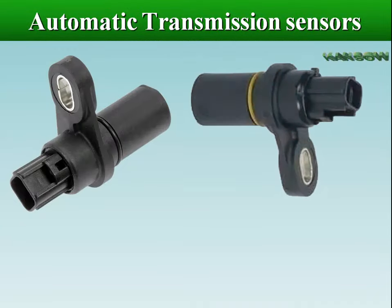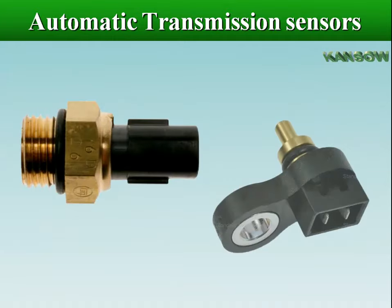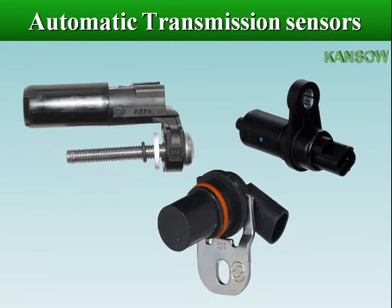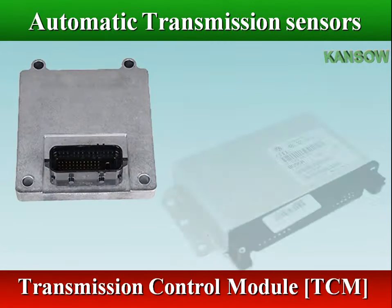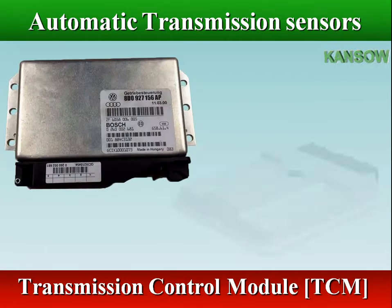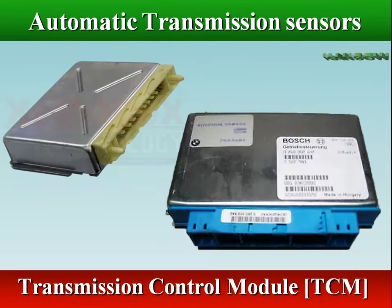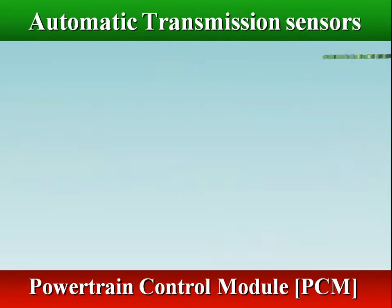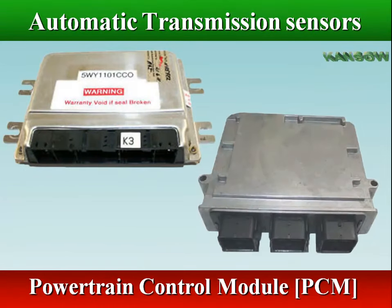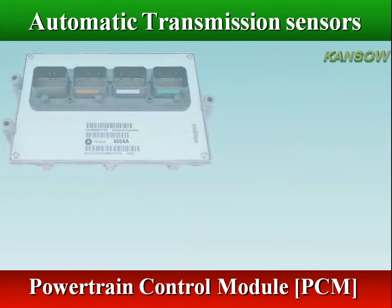There are a lot of sensors in control modules that play a role in automatic transmission operation. The electronic control of the transmission is performed by the Transmission Control Module (TCM), which receives and processes signals from various switches and sensors. However, some systems use a single computer for both the engine and transmission control, commonly referred to as a Powertrain Control Module (PCM).